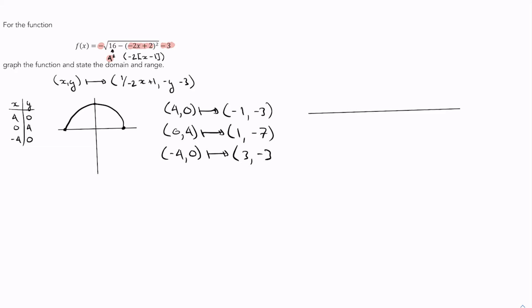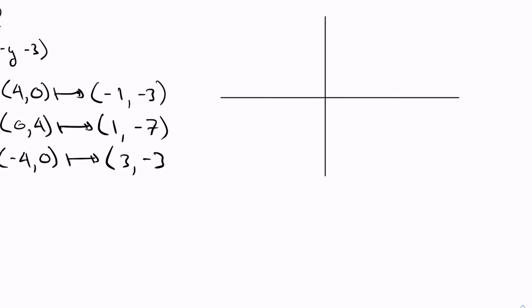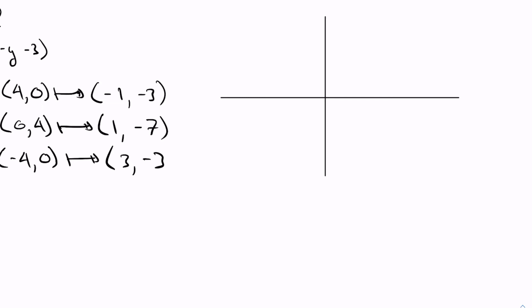Let's do a rough grid here. There is my x, here is my y, and I'm going to put in (-1, -3), so back 1, down 3, over here. Then (1, -7) will be somewhere down here. Finally I get to 3,